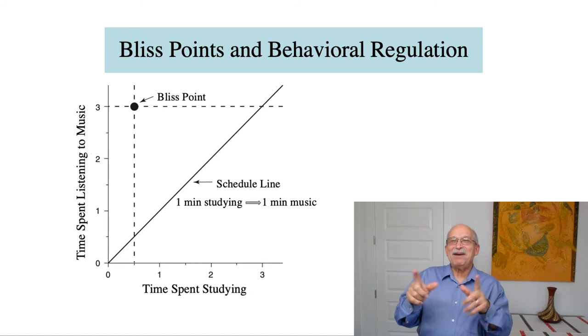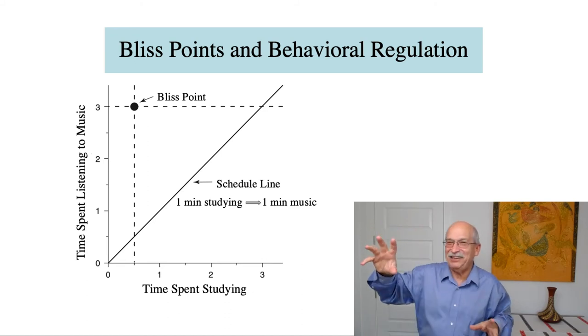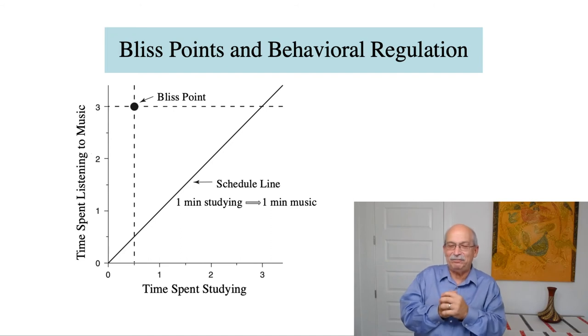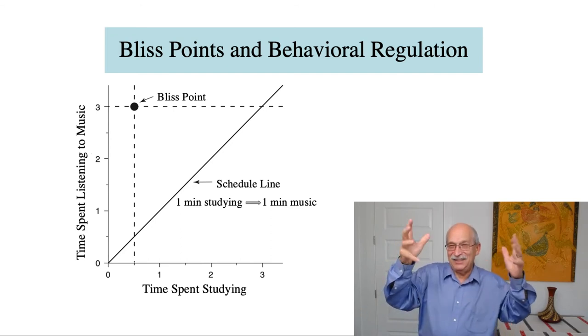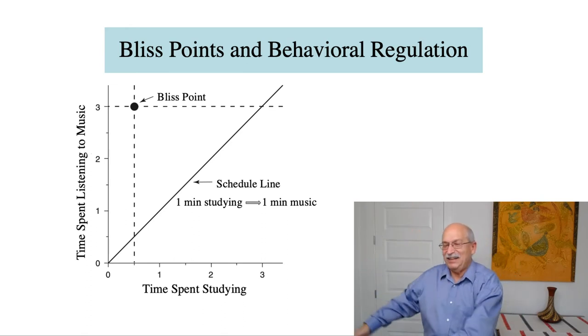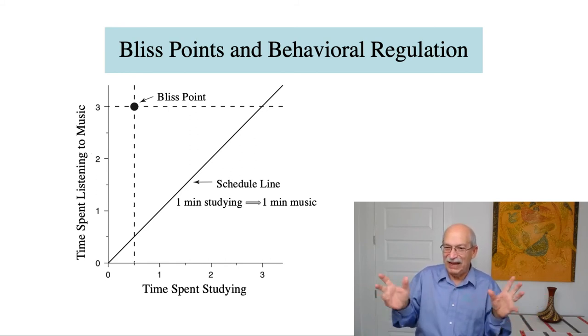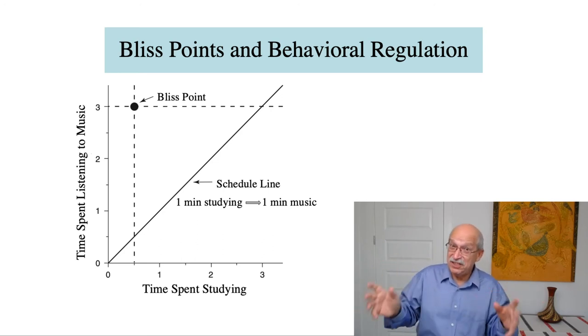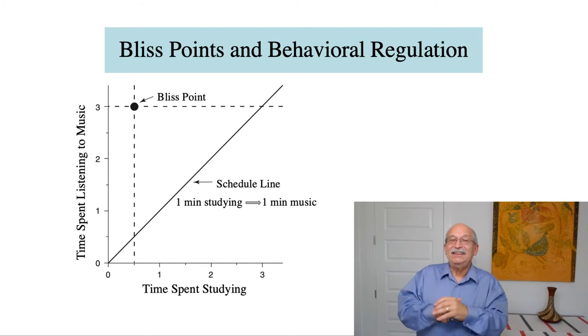This turns out to be hugely relevant to instrumental conditioning. So if you may go back to the first slide. Okay. So as you may recall here, the instrumental conditioning procedure involved a requirement that the teenager study for a minute in order to get access to music for a minute. Now if you have complete control over how this teenager gets access to music, and if there are no substitutes available for enjoying music, then you're going to drive up studying behavior.